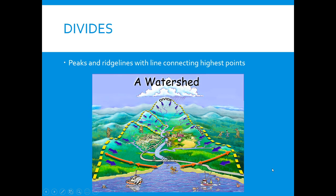Divides are also a big part. These are the peaks and ridgelines with a line connecting the highest points. On a topographic map, we look at these peaks. A drop of water that hits the very top of a mountain — one drop a little bit further over would go down into this watershed, while a drop a little bit further to the left would go into a different watershed. So these divide watersheds because of their geography.